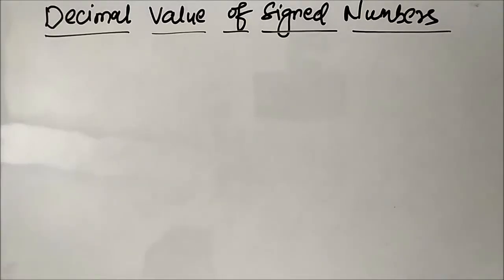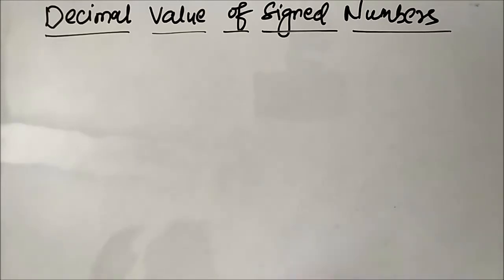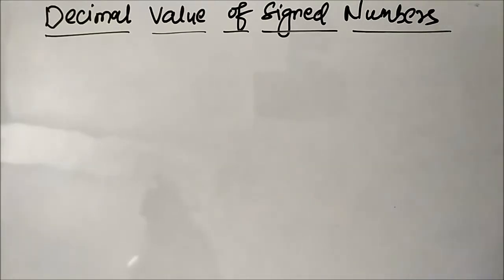Hello friends, welcome to engineering tutorial. In my previous videos we discussed about the representation of signed numbers in binary form, and we discussed three methods: the sign magnitude system, the 1s complement system, and the 2s complement system. There we discussed how to represent a given integer, be it positive or negative, in binary form.